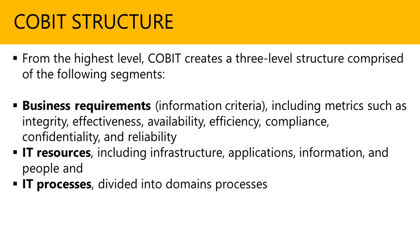So basically, the business requirements — also the information criteria — includes metrics such as integrity, effectiveness, availability, efficiency, compliance, confidentiality, and reliability. These are the areas that fall within the business requirements set. The IT resources, pretty straightforward, includes the IT infrastructure, software applications, the information itself, data, and then people. And finally, the IT processes comprise or are divided into domain processes. I'm going to explain the IT processes in the next couple of slides because these are important.